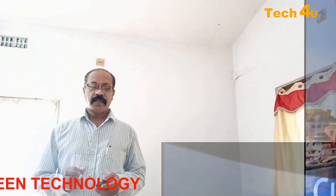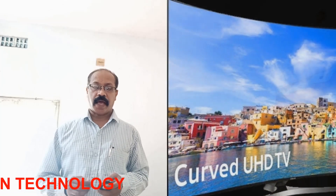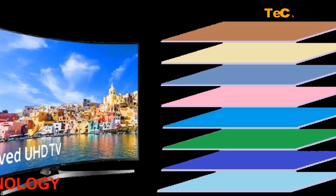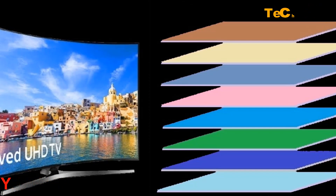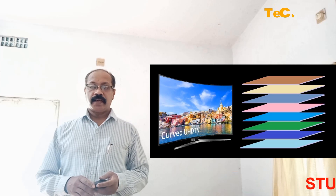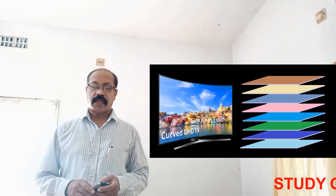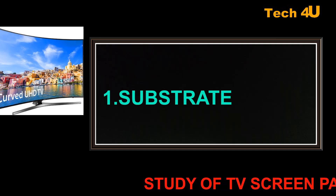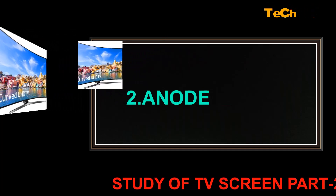There are eight different layers stacked in OLED display technology. This is the breakdown of an OLED structure. The actual OLED layers in the middle occupy less than 1/200th the thickness of a human hair. The first layer is known as the substrate. The second layer is the anode.